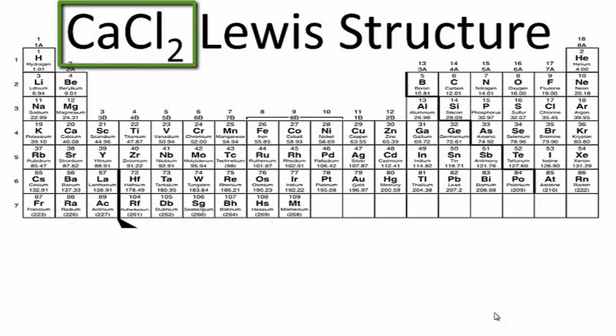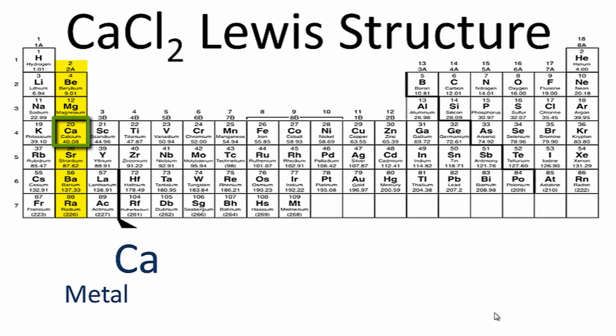So for the Lewis structure for CaCl2, calcium chloride, first we'll look at the periodic table and find calcium. Calcium is in group 2 or 2A, that means it's a metal, it also means it has 2 valence electrons.